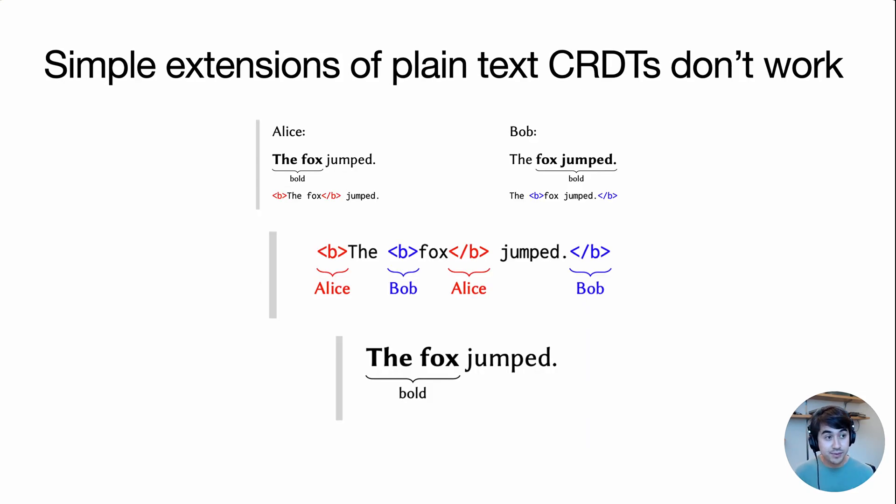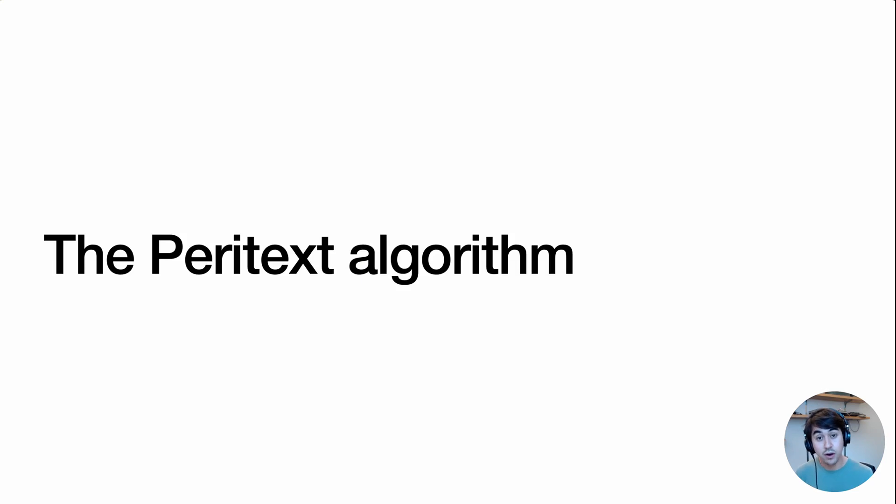Now you might ask, could we just add some simple extensions to these existing plain text CRDTs to enable them to support rich text? For example, you could add inline control characters, like HTML tags, into the plain text sequence. However, we show in our paper that these kinds of simple extensions actually fail to preserve intent the way we want.